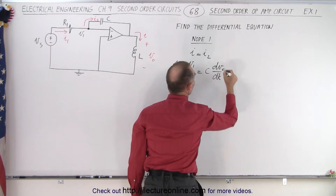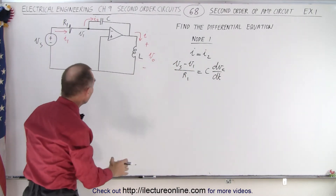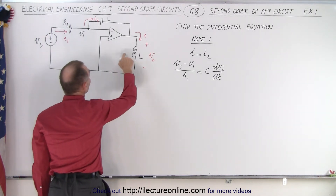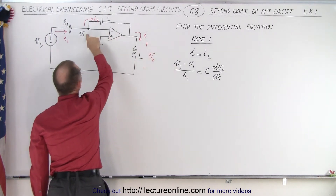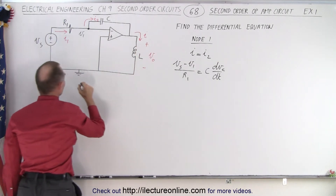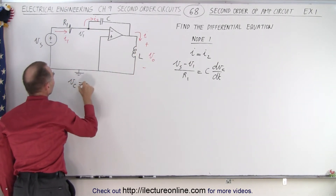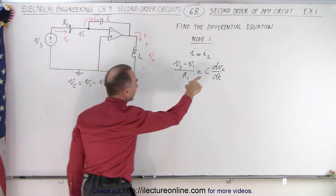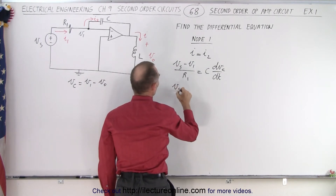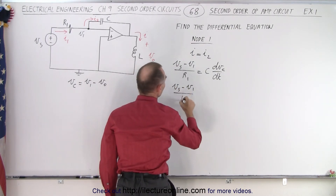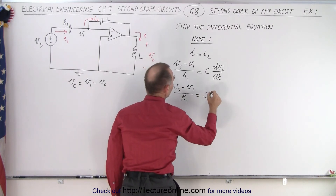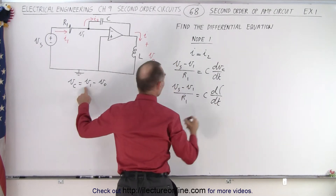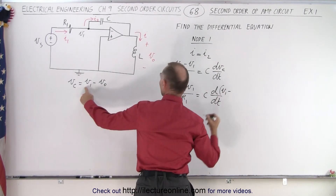Now we'll write the voltage across the capacitor. Notice that it's going to be equal to the difference between V1 and the output voltage. So we can say that the voltage across the capacitor is equal to V1 minus the output voltage, and that goes into our equation. So we can write that V source minus V1, divided by the resistance, is equal to the capacitance times d/dt of (V1 minus V0).